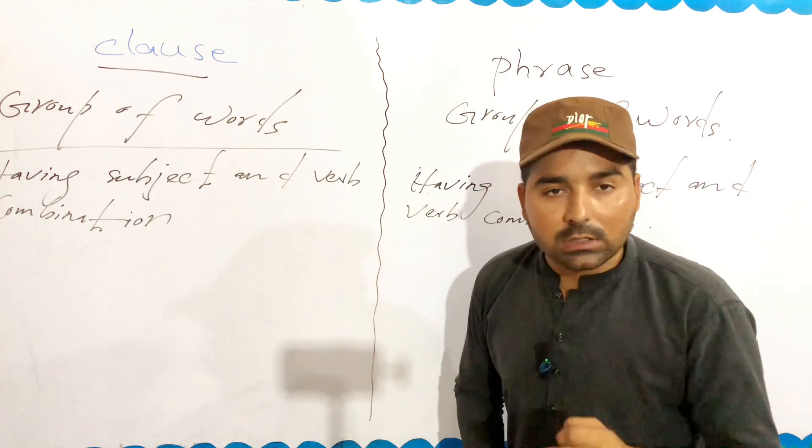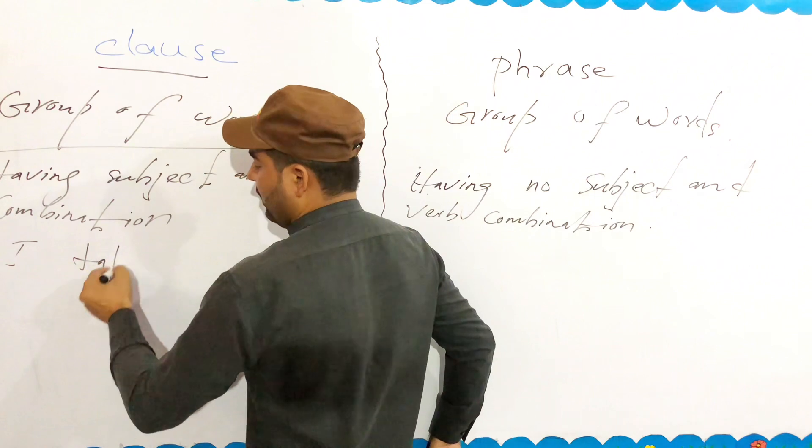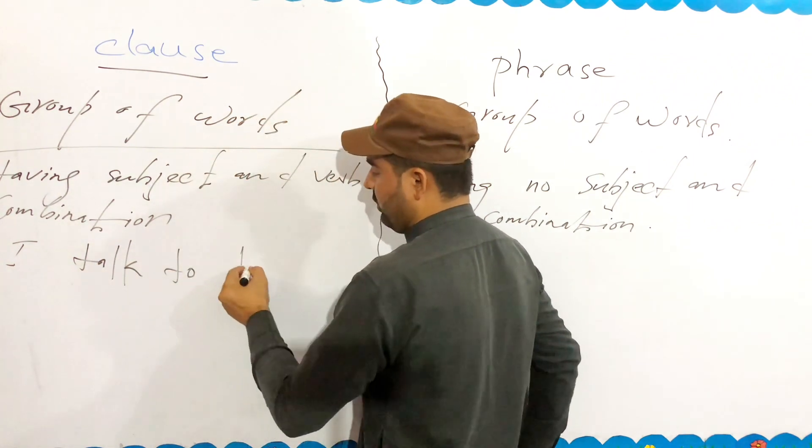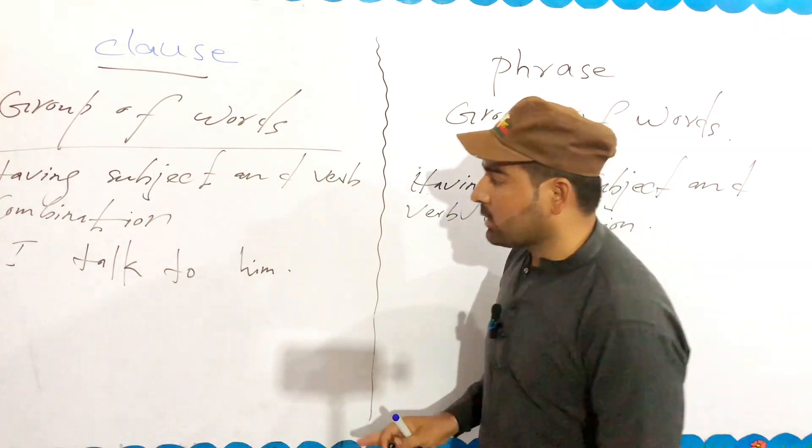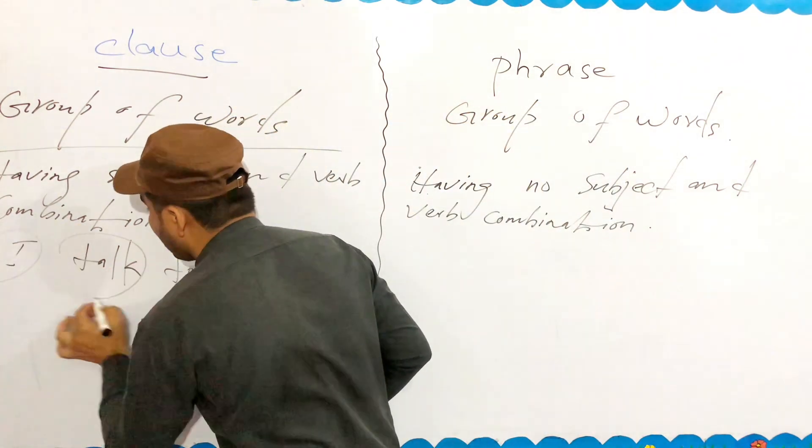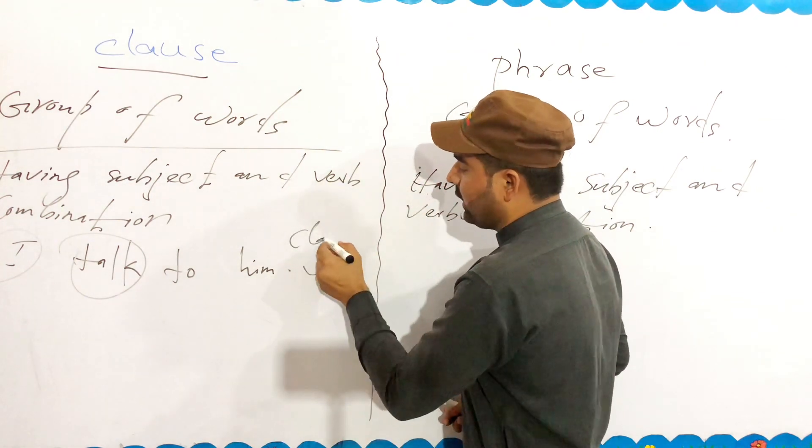For example, if I talk to him - here you have a subject 'I' and verb 'talk'. Subject and verb. If you have a subject and verb, then you have a clause. What is it? Clause. Why is it? Because you have subject and verb.